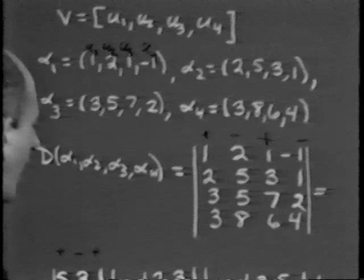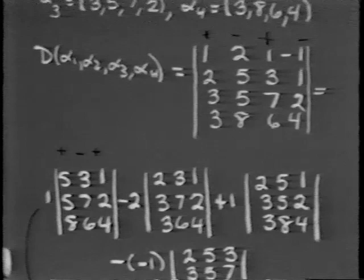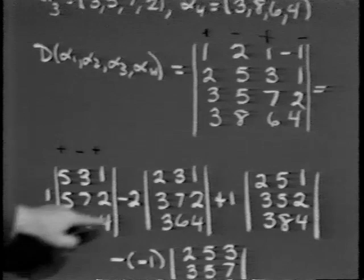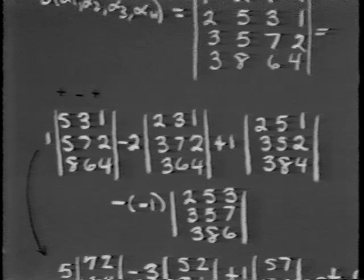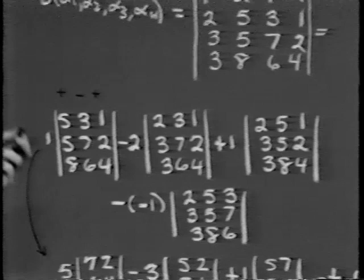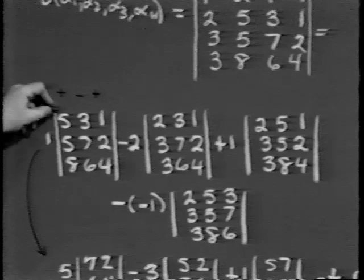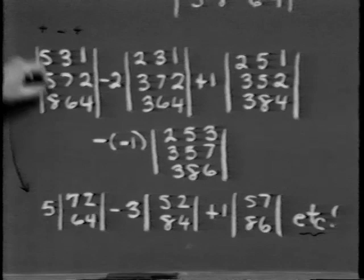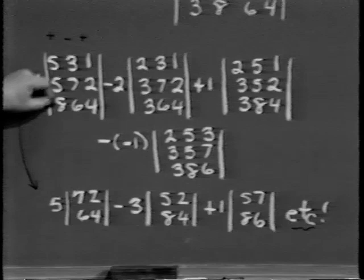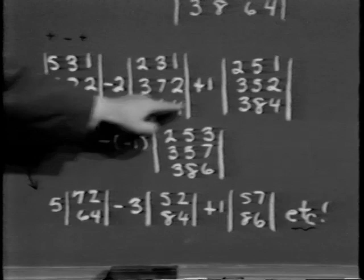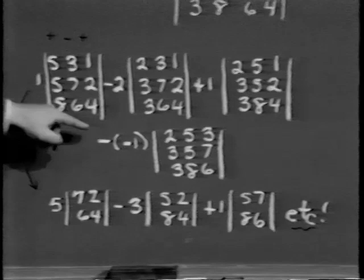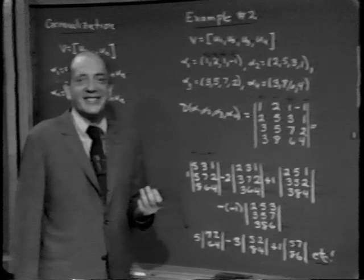This 4×4 determinant can be written as a sum of four 3×3 determinants, and each 3×3 can be written as three 2×2's — giving 12 two-by-two determinants altogether for just this four-dimensional case. Imagine applying this technique for a 10-dimensional vector space. It turns out that Theorem 2 gives us a tie-in between row-reduced matrices and a quick way to compute determinants.